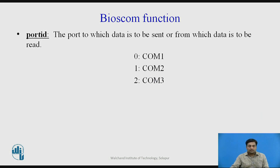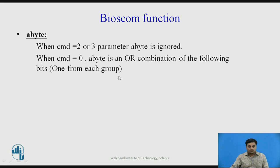The second part is port ID, which specifies the port to send data to or read from. Pass value 0 for COM port 1, value 1 for COM port 2, and value 2 for COM port 3. The third part is a byte. When command 2 or 3 is selected, the byte value is ignored. But when command 0 is used to set port values, the byte is an OR combination of bits from four groups, selecting one value from each group.